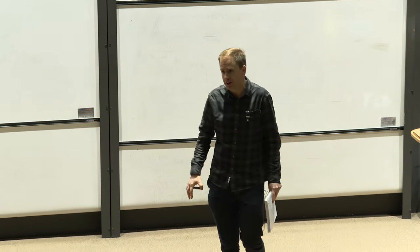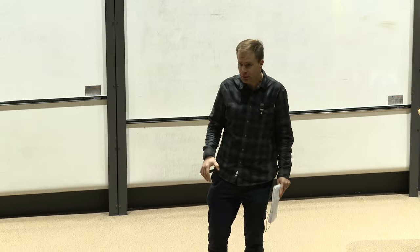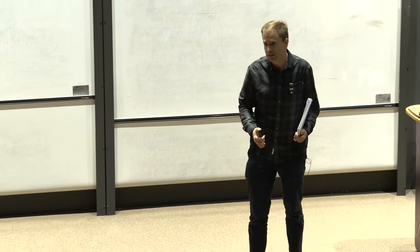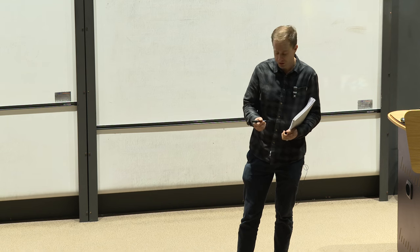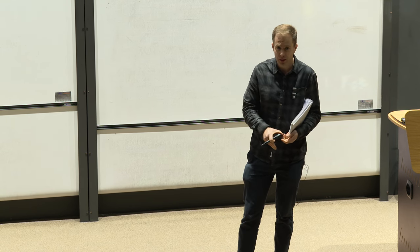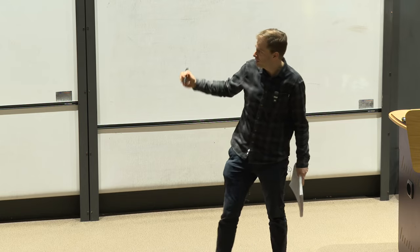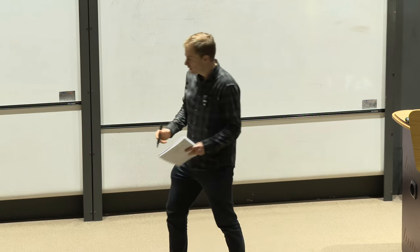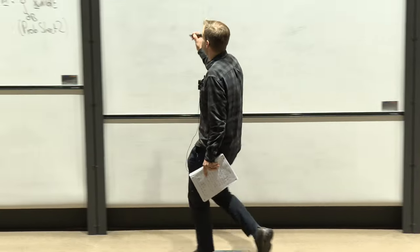Today what I wanted to do is start to use Blasius' theorem to calculate forces on bodies. To start with, I wanted to think about a problem we've already considered, which is uniform flow past the circular cylinder. That's something we dealt with in lecture five, but I wanted to do it from the point of view of the complex potential that we've developed. So that's the first example.